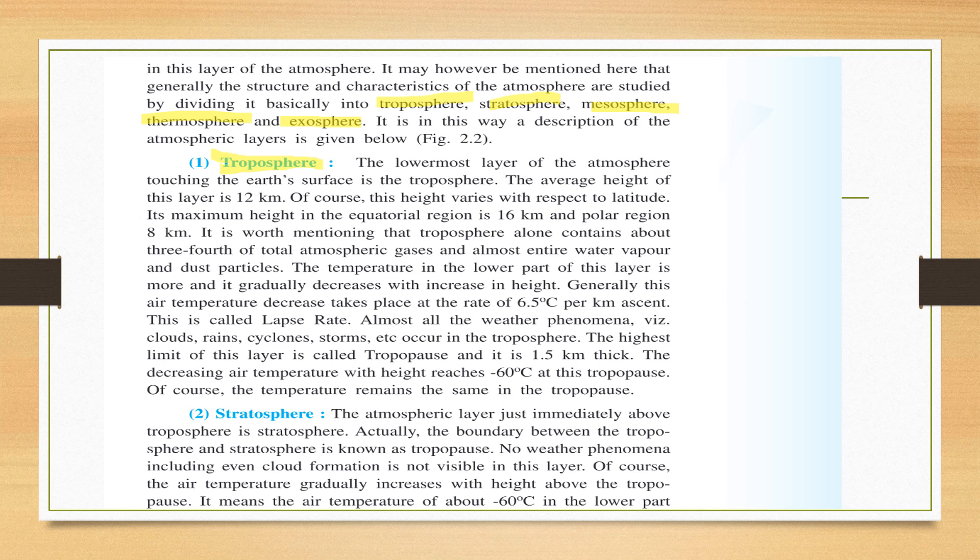Troposphere is a layer which is closest to the earth. It almost touches the earth surface. Its average height is 12 km. And this height varies according to latitude. So maximum height will be found at equatorial region latitudes, and the minimum height will be found at polar regions, which is 8 km. It is worth mentioning that troposphere alone contains about three-fourths of total atmospheric gases and almost entire water vapor. So whatever gases composition is there of atmospheric gases, about 70 percent of the concentration is in the troposphere layer. And almost entire water vapor and dust particles are in the troposphere. So we can say that rain formation happens in the troposphere layer.